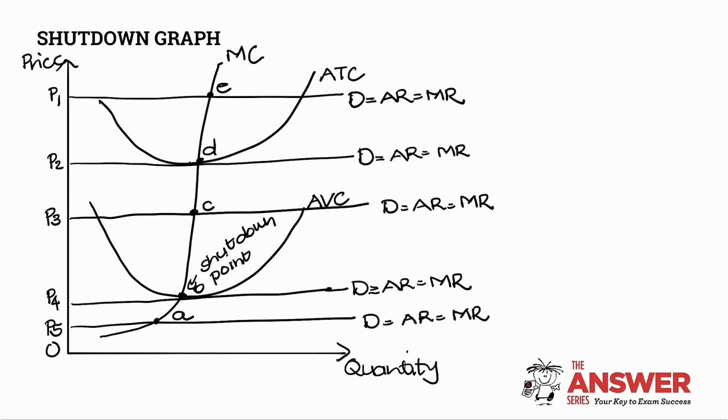So just a quick recap. Economic profit, normal profit, economic loss, shutdown point where my marginal cost curve intersects with my average variable cost curve and at point A I will definitely not be producing.